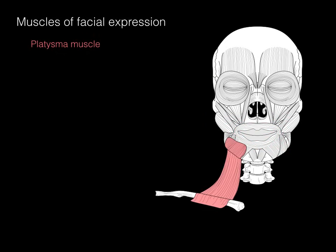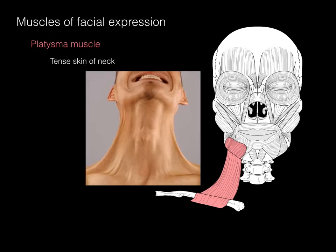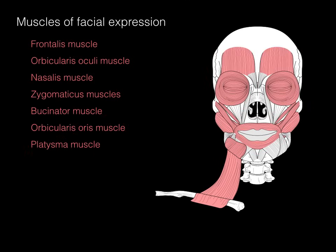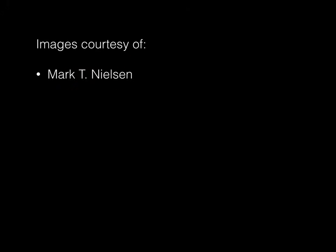The platysma muscle helps tense the skin of the neck — as in shaving. This muscle is a very flat muscle located deep to the skin surrounding the neck. All these muscles of facial expression are derived from the second branchial arch, which during embryonic development migrate to form the most superficial layer of muscles on the face.